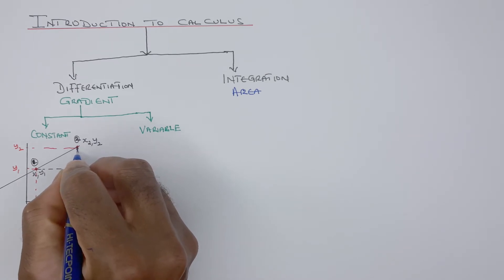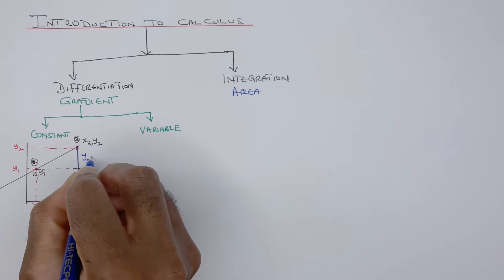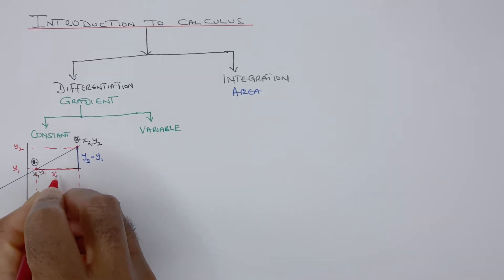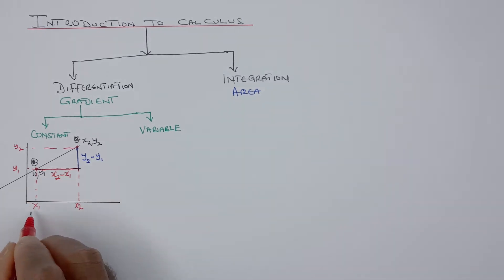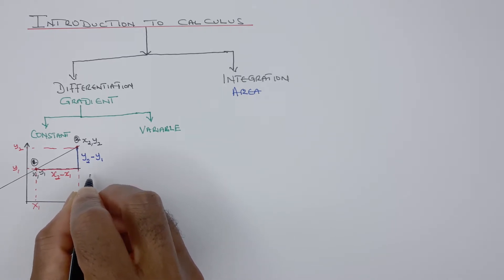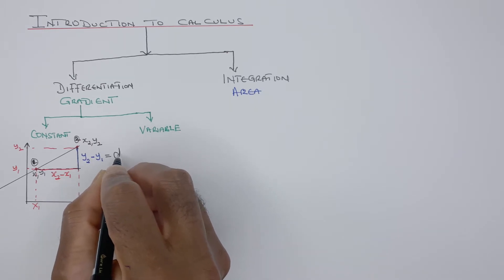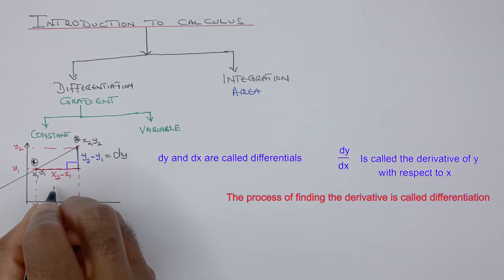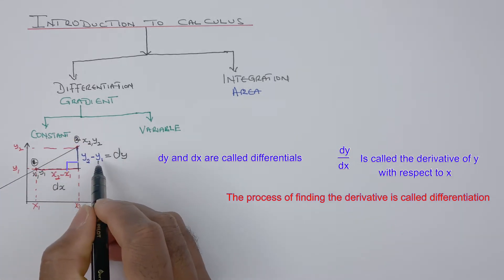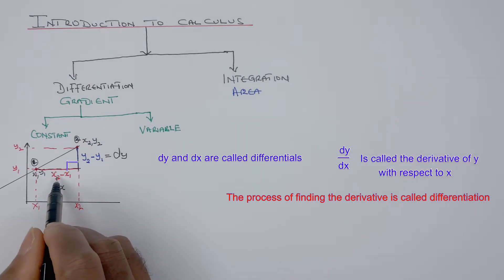The vertical distance here is y2 minus y1, and this horizontal length is x2 minus x1, because x2 is bigger than x1 and y2 is bigger than y1. dy means difference in y — you change from y1 to y2. And dx is the difference in x, meaning x2 minus x1.